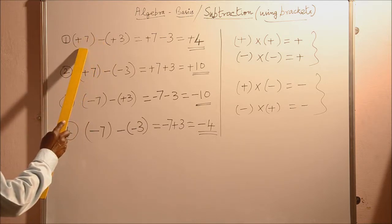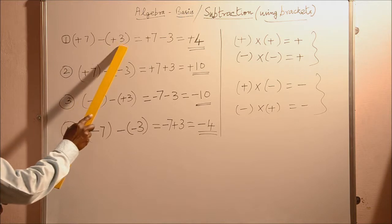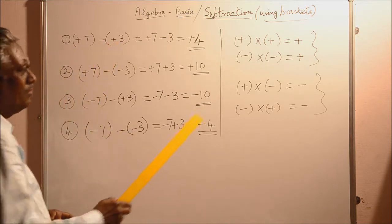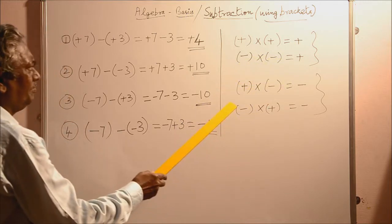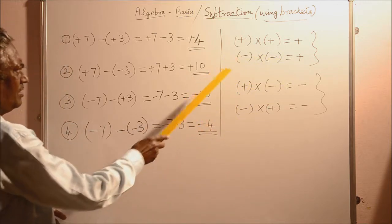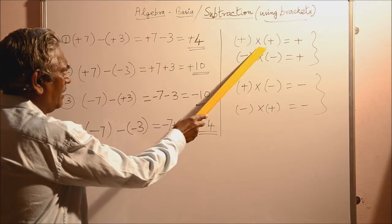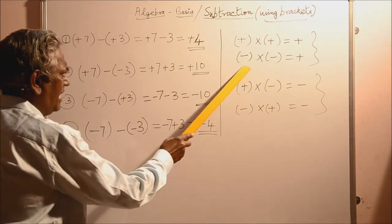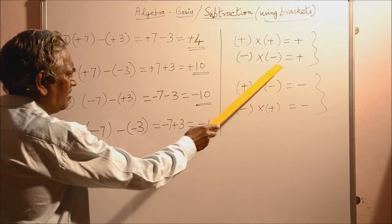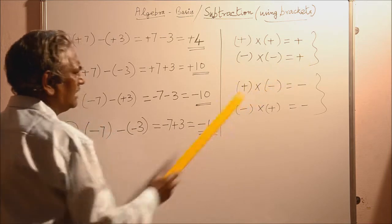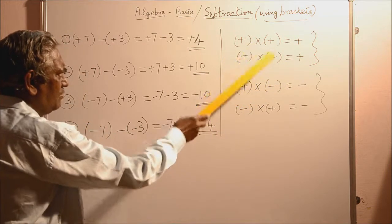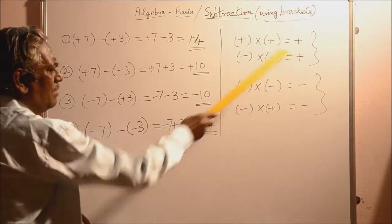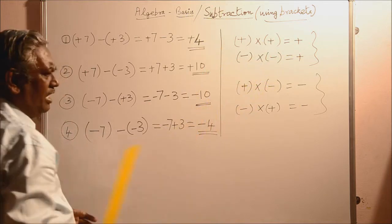Plus 7 minus of plus 3. As we have already known from multiplication: plus multiplied by plus always gives you plus, and minus multiplied by minus always gives you plus. Whenever you have got the same signs and you multiply them, you get a plus sign only. Remember.